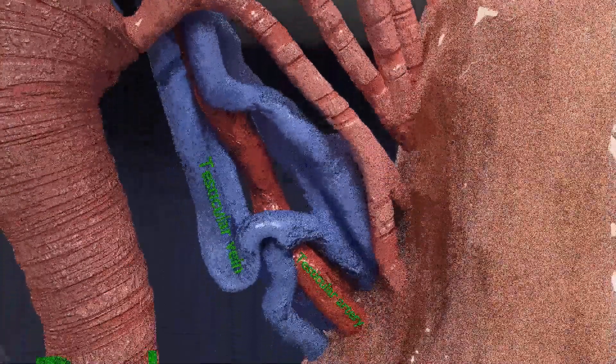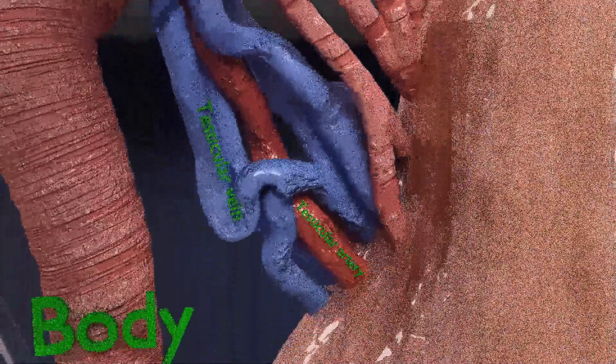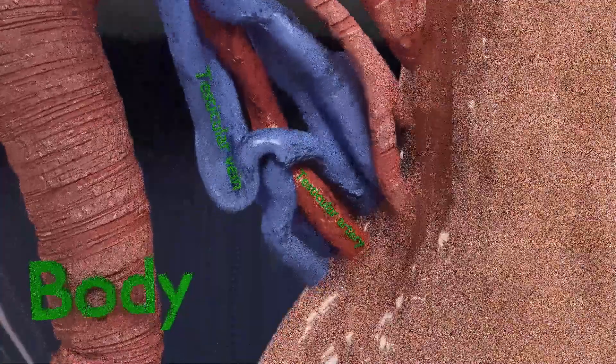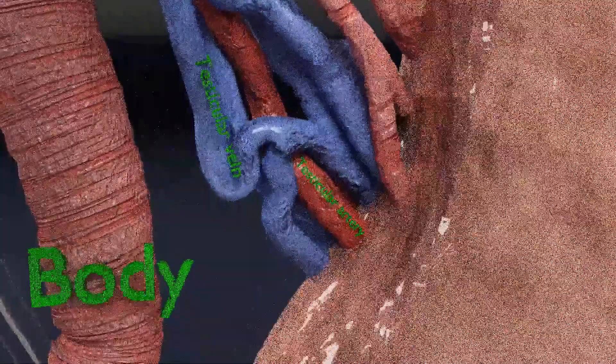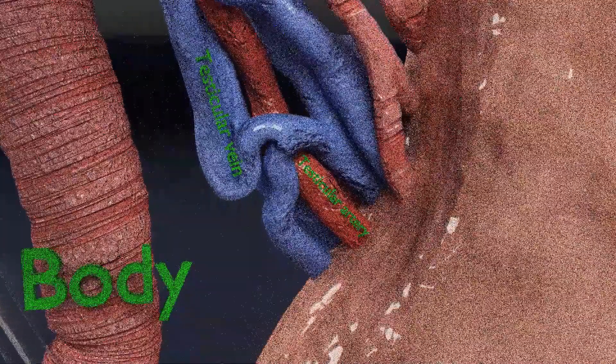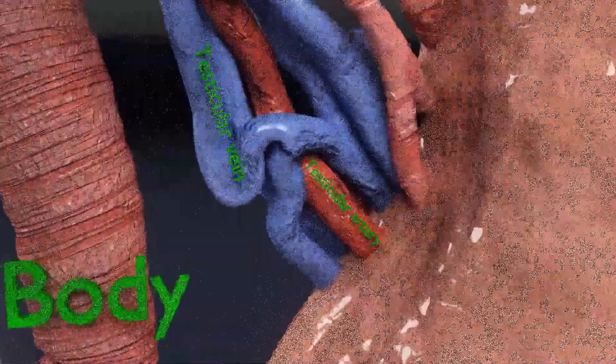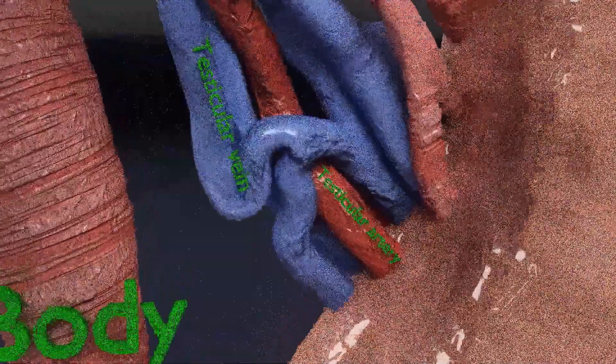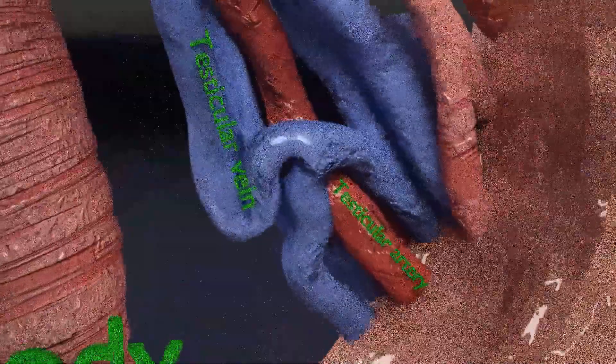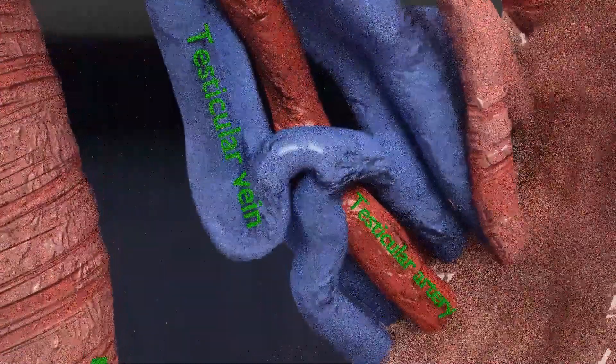Now you can see the testicular vein and the testicular artery. The testicular vein or spermatic vein, also called the male gonadal vein, carries deoxygenated blood from its corresponding testes to the inferior vena cava or one of its tributaries.